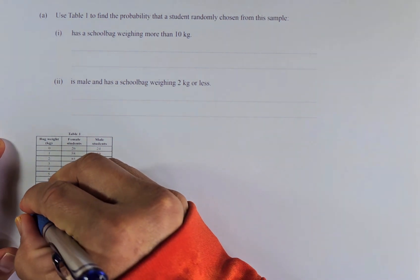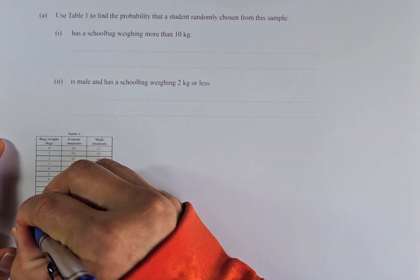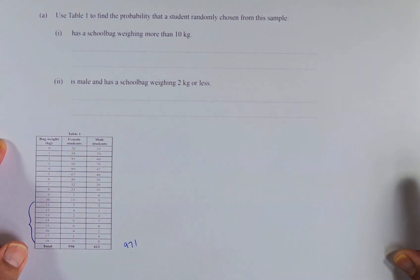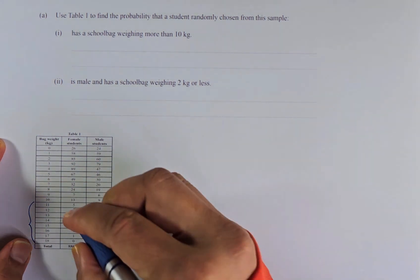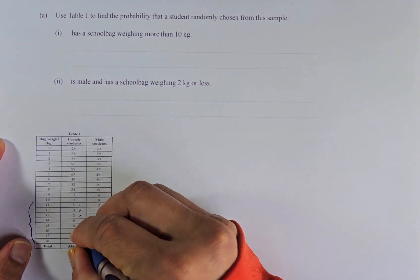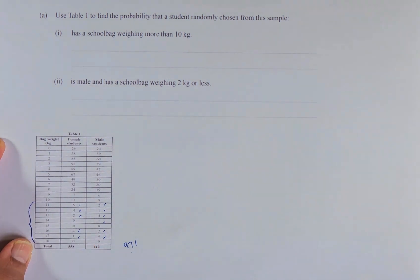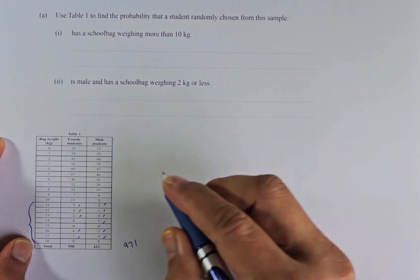So 10 kg is here, so more than 10 kg is all the numbers here. It's going to be 11 onwards, 11 kg to 18 kg. So we are going to add all these numbers: 5, 4, 2, 4, 1, 2, 1, 4, 1, 2, 4. If you are accurate, the answer is going to be 30. So all these numbers will add up to 30.